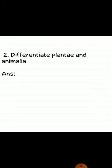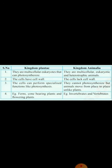Second question: differentiate Plantae and Animalia. Kingdom Plantae: they are multicellular eukaryotes that can photosynthesize; cells have cell wall; cells perform specialized functions like photosynthesis; examples include ferns, cone-bearing plants, and flowering plants. Kingdom Animalia: they are multicellular eukaryotes and heterotrophic; cells lack cell wall; they cannot photosynthesize but animals move from place to place unlike plants; examples include invertebrates and vertebrates.